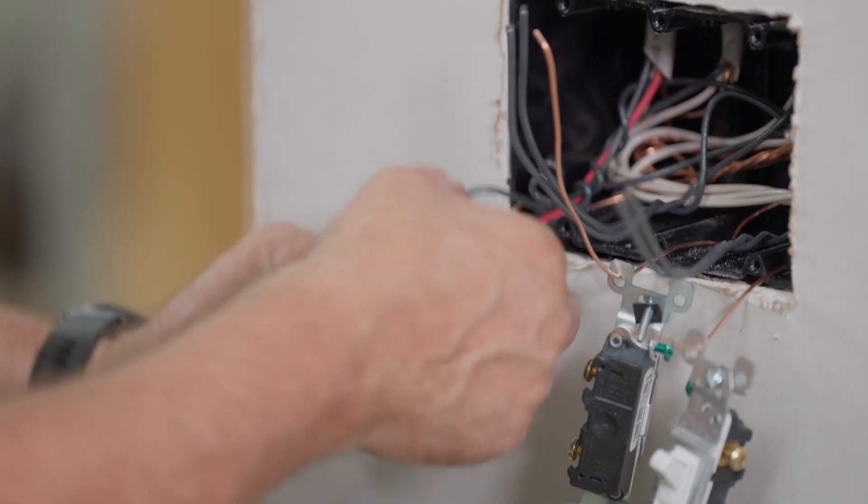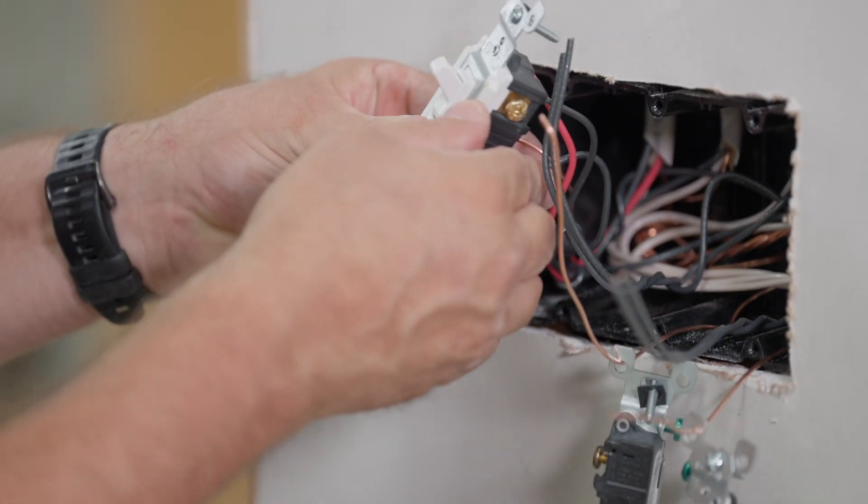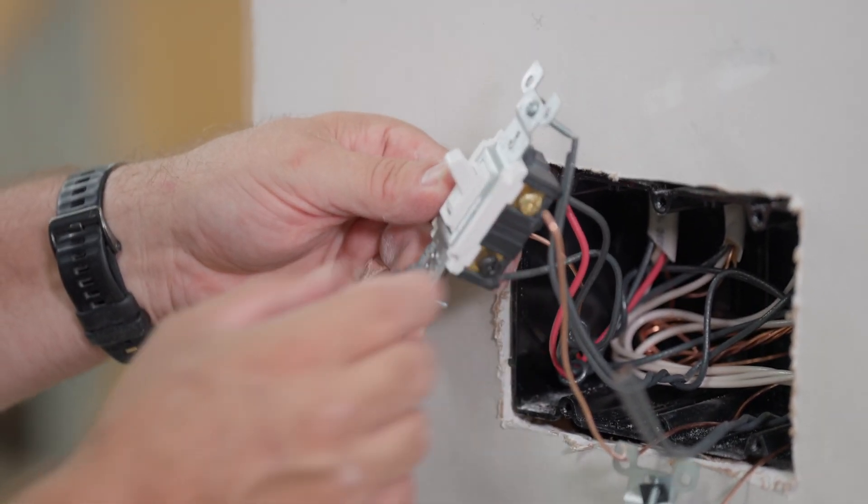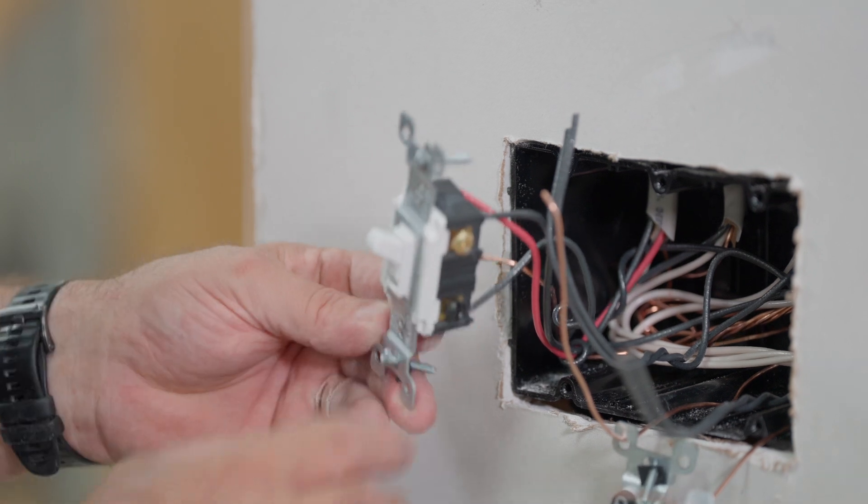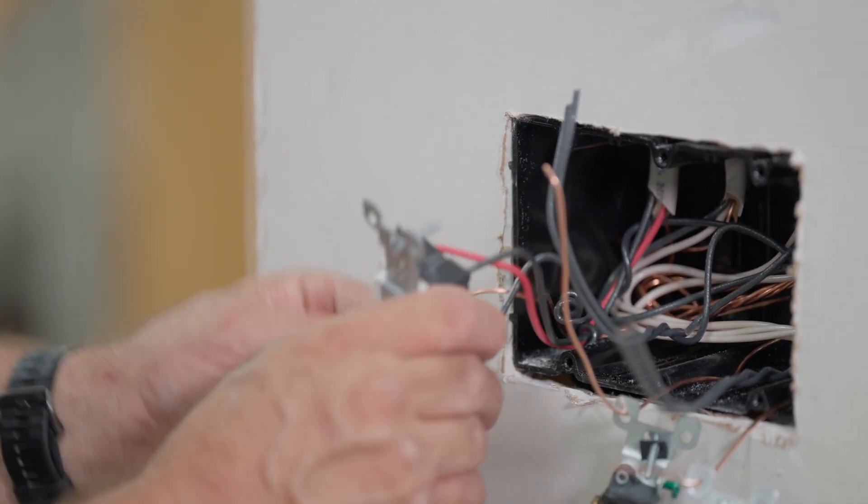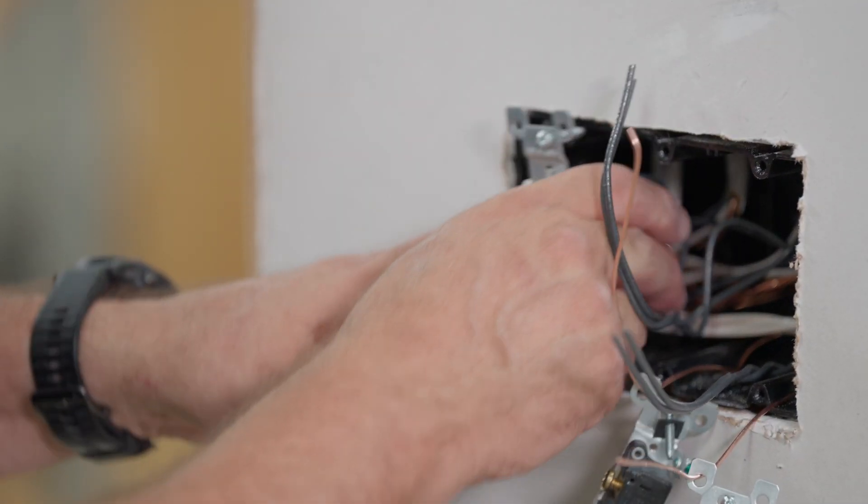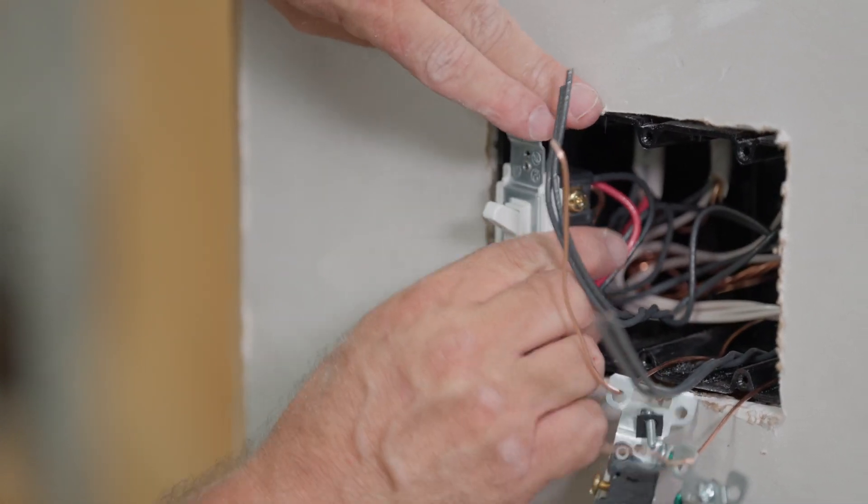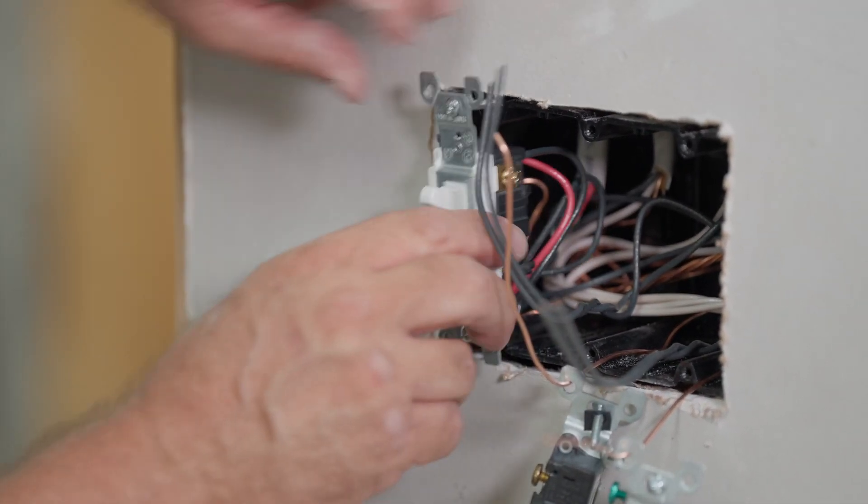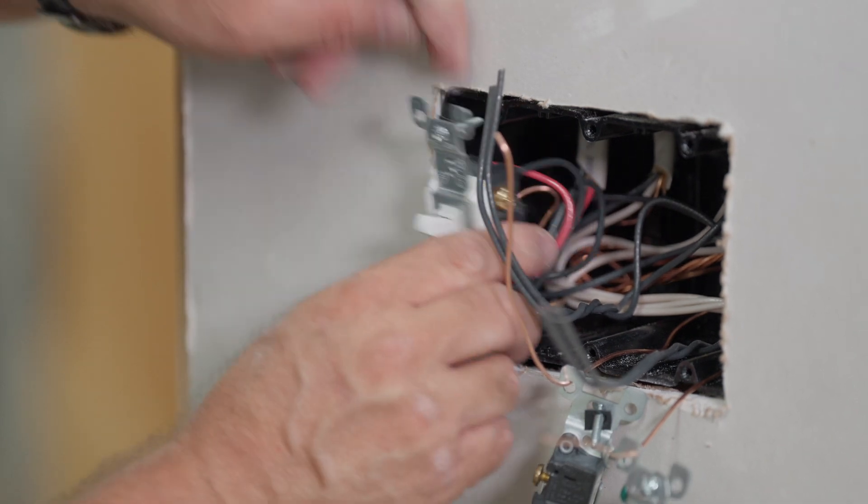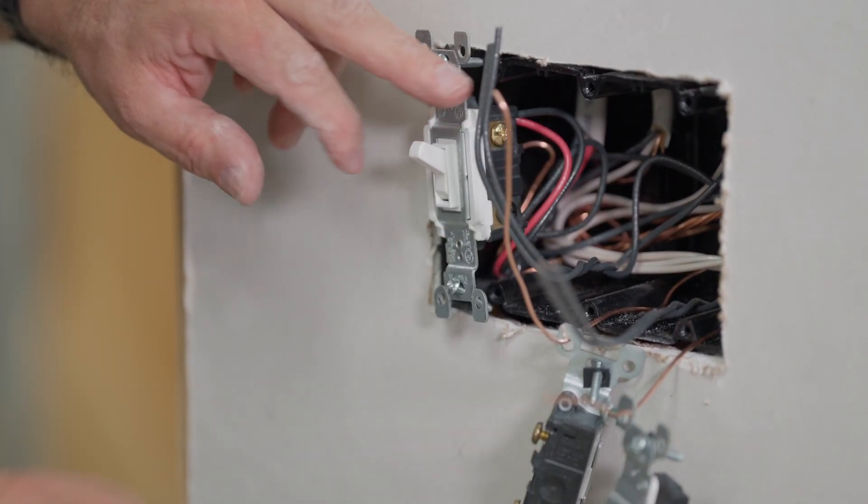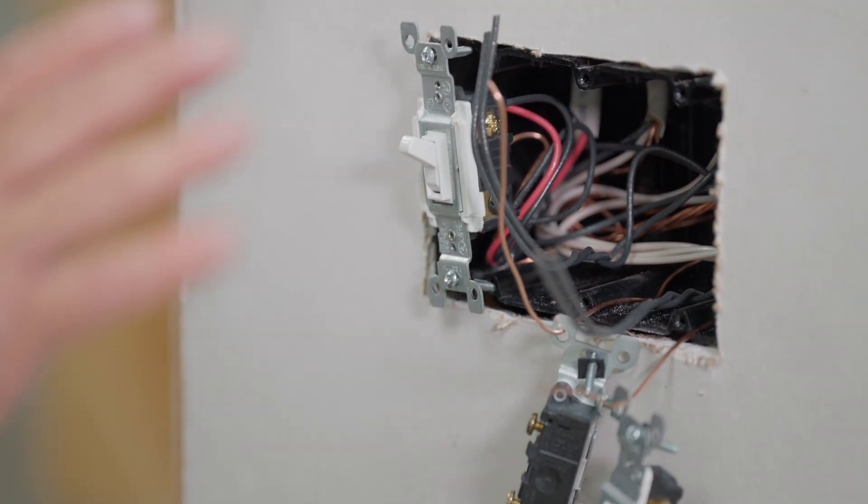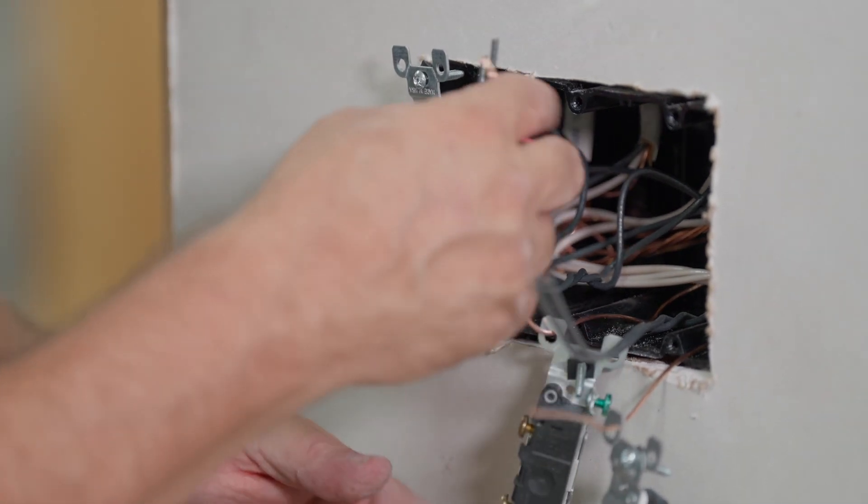So now all you have to do is take this switch and on a three-way switch, there's really no top or bottom. You can go either direction, but most commonly the ground is to the bottom left. Push back that ground wire way back in the box so it doesn't interfere with any of the other terminals. You don't want your ground wire to touch any terminal because that could cause a dead short.